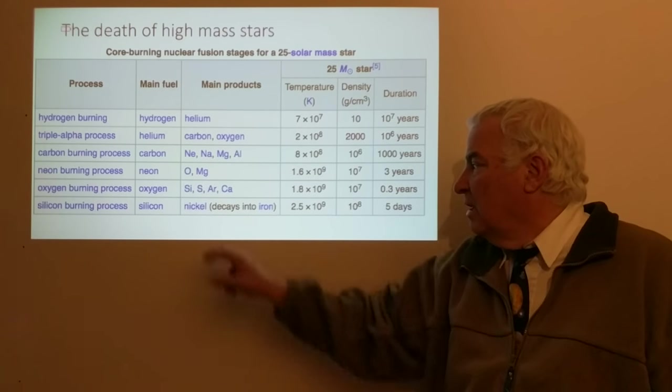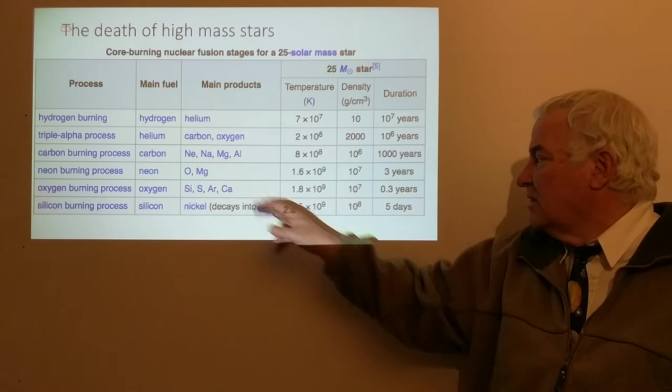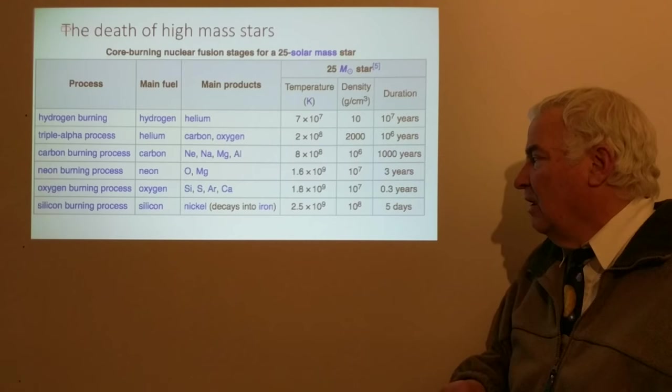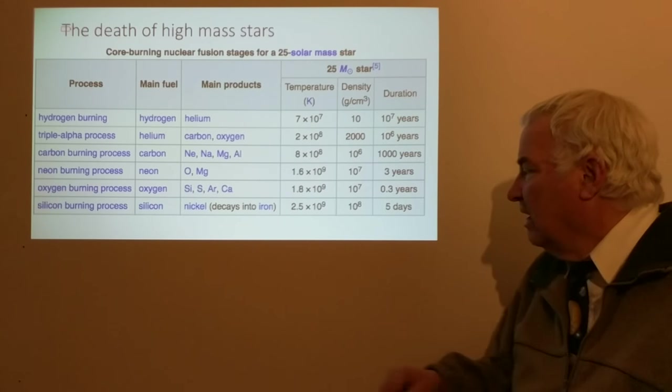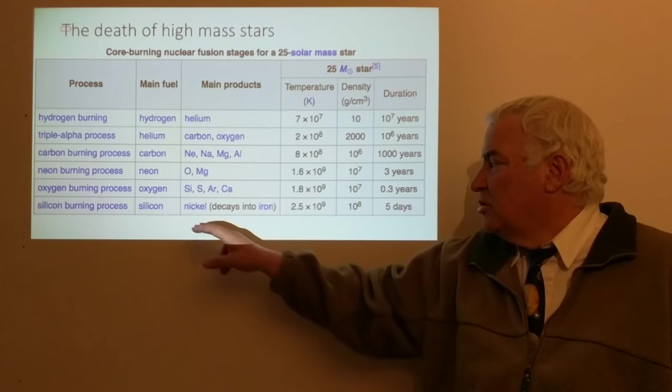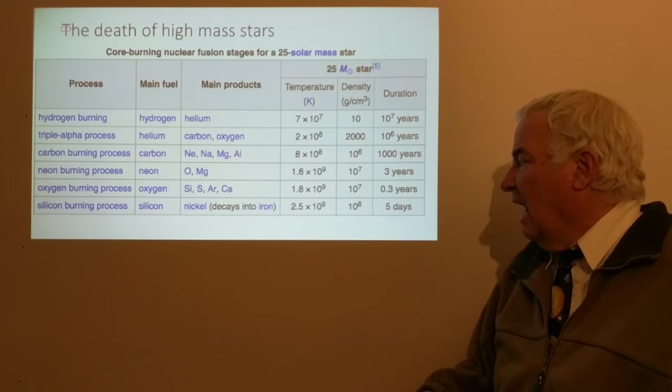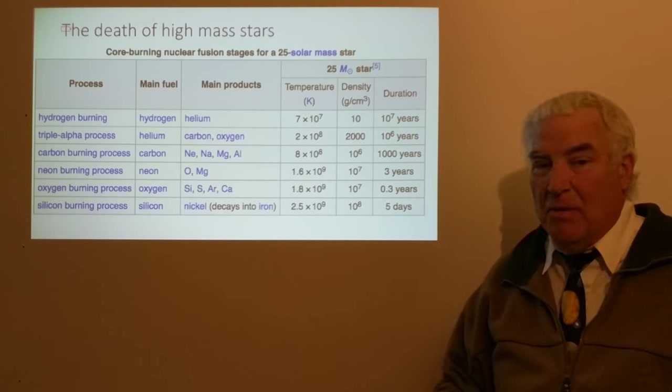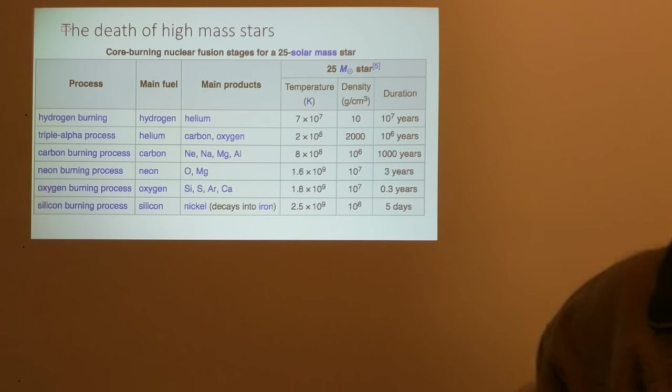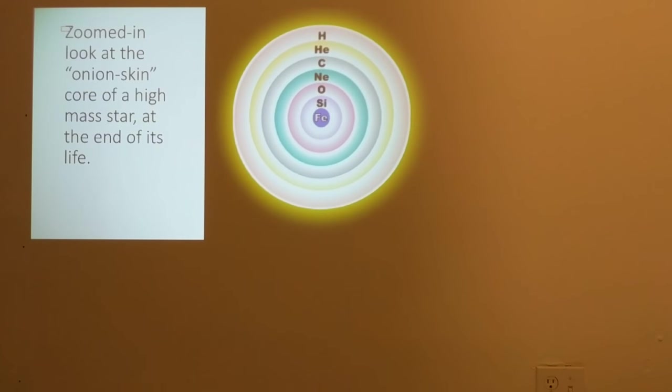Oxygen, once made, can produce silicon, sulfur, argon, and calcium in only about a third of a year, about 4 months. Silicon is then used to produce nickel, which decays into iron. That iron core is produced over a period of about 5 days. Suddenly, the star no longer has any fuel left to burn.